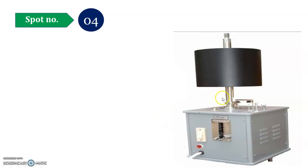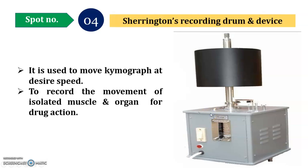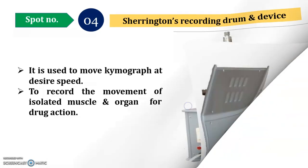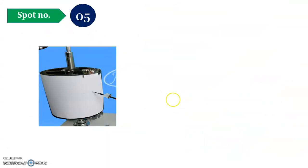Next is spot number four under the apparatus section. The name is the Cylinder Rotating Drum. We use it to move the kymograph paper at the desired speed — we stick white paper known as kymograph paper onto this drum. The drum helps record the movement of isolated muscles or drug action.